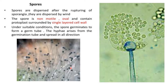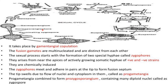Sexual reproduction takes place by gametangial copulation. The fusion of gametes is multinucleated and distinct from each other. The sexual process starts with the formation of two special hyphae called zygophores, which arise near the tips of actively growing somatic hyphae — one is the positive and the other is the negative strain. They are chemically induced, and the zygophores meet and adhere in pairs at the tip to form a fusion septum.